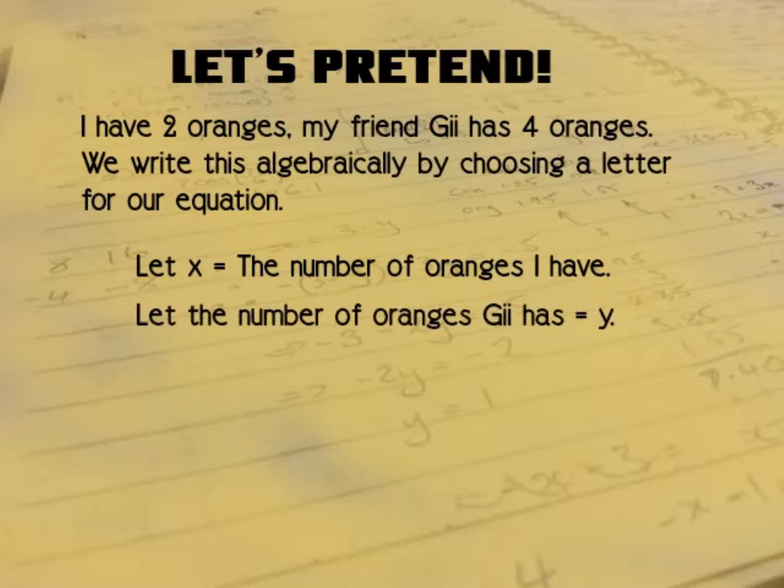And let's do this for Gil's oranges. Let the number of oranges Gil has equal Y. Again, we're just choosing a letter to stand in for a number. And that way we can write it algebraically. So we have X equals 2 and Y equals 4.